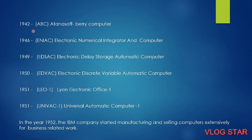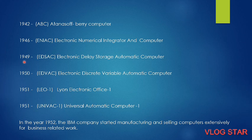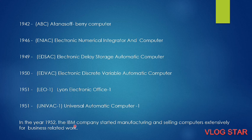In 1942, we had the Atanasoff–Berry Computer, known as ABC. Then in 1946, we had ENIAC — Electronic Numerical Integrator and Computer. In 1949, EDSAC — Electronic Delay Storage Automatic Computer. In 1950, EDVAC — Electronic Discrete Variable Automatic Computer.